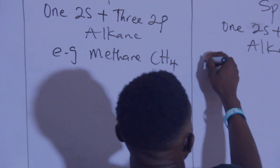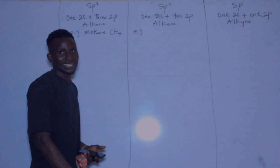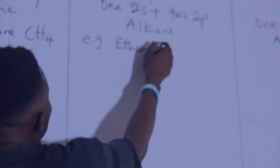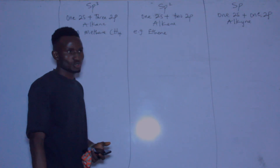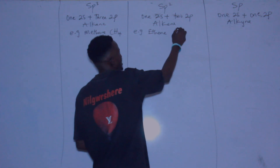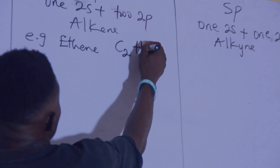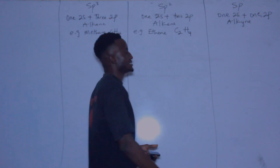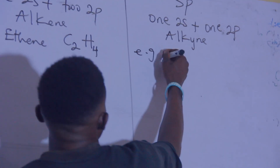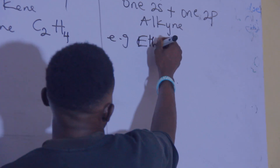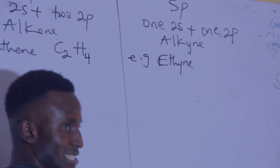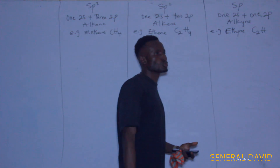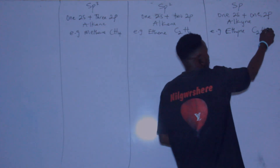The first member of the alkene family is ethene, with the molecular formula C₂H₄. The first member of the alkyne family is ethyne, with molecular formula C₂H₂. That is 2 times 2 equals 4 minus 2, giving H₂.